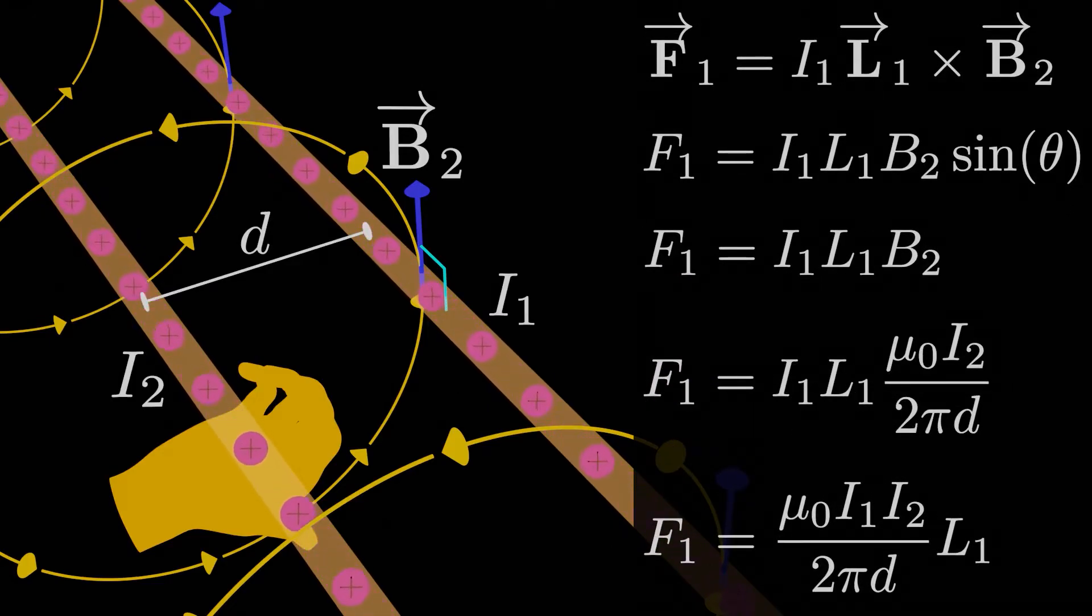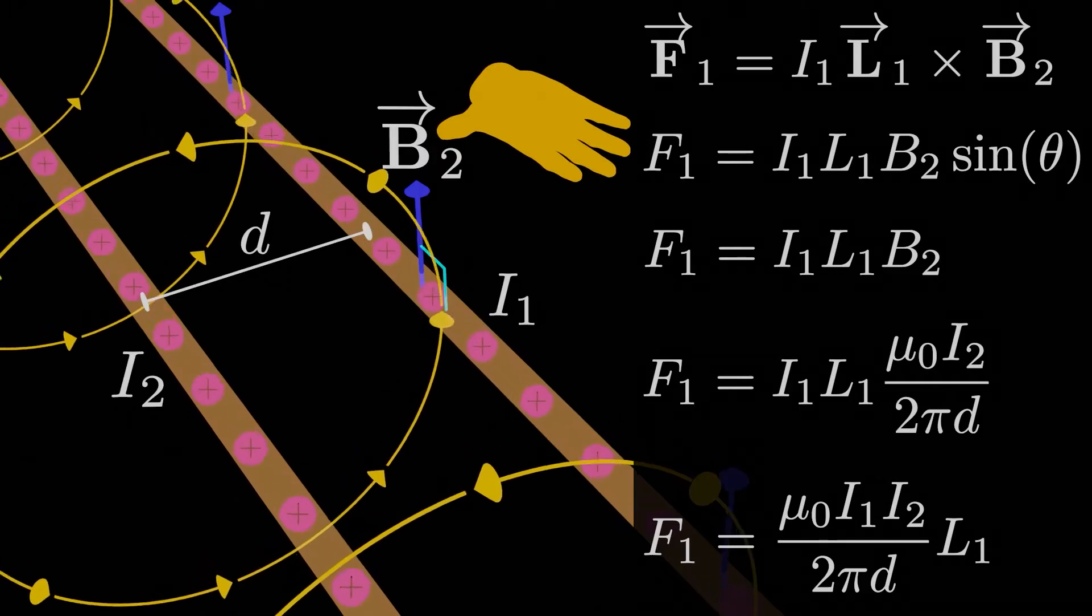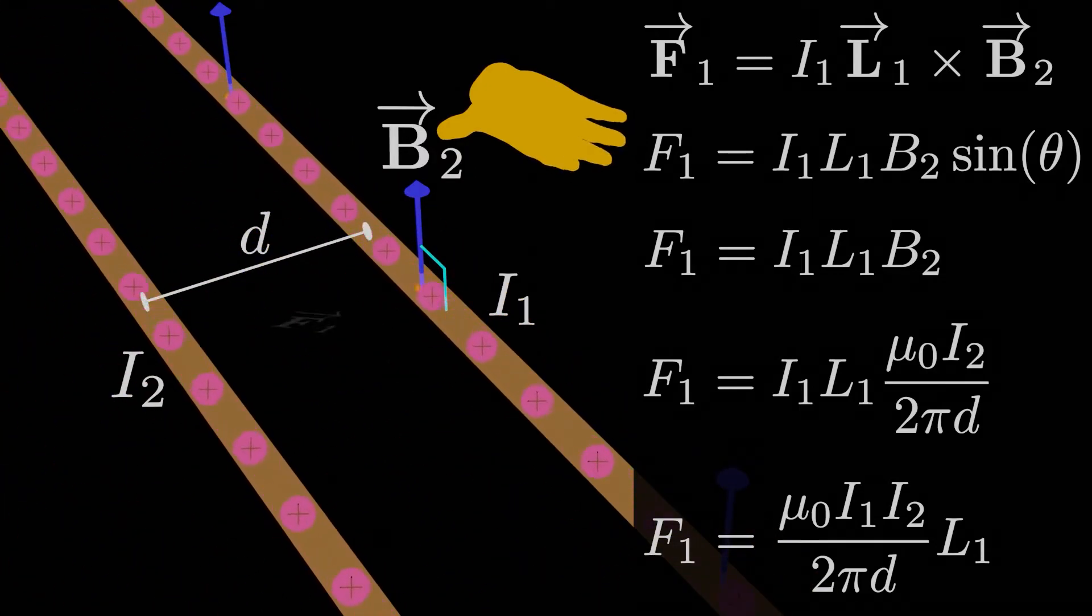If we want the direction of the force, we have L cross B. So just use the OG right-hand rule. Point your right fingers in the direction of the L vector, or the direction of the current, and then curl your fingers in the direction of B2, and your extended thumb points in the direction of the force F1. In this case, pointing towards the second wire.